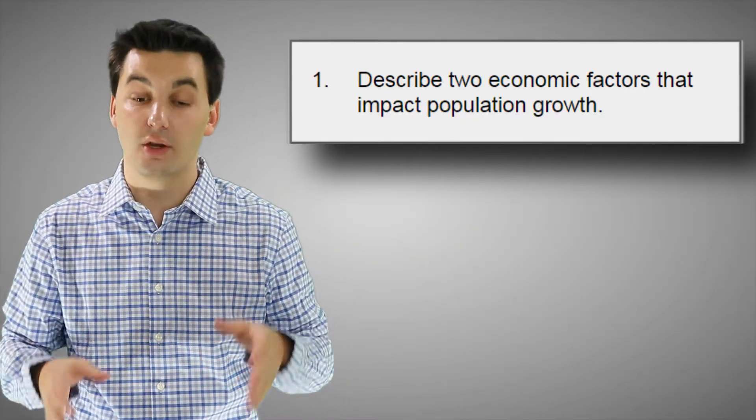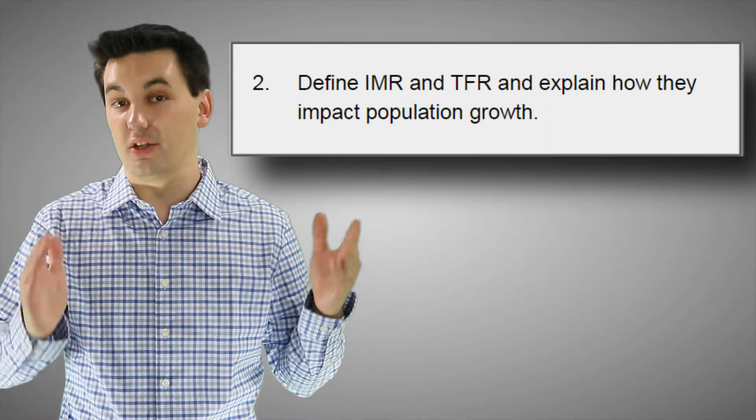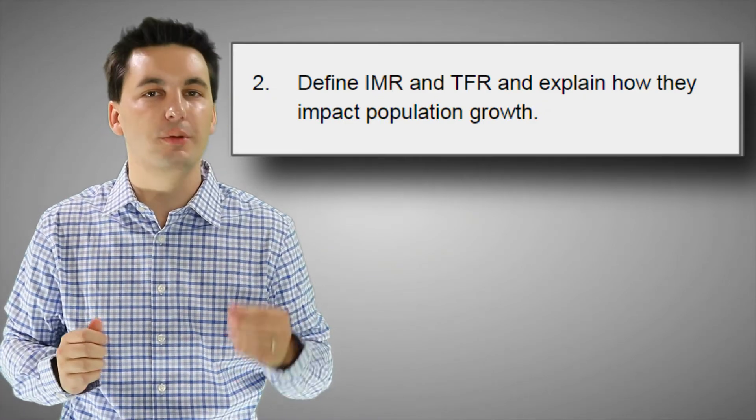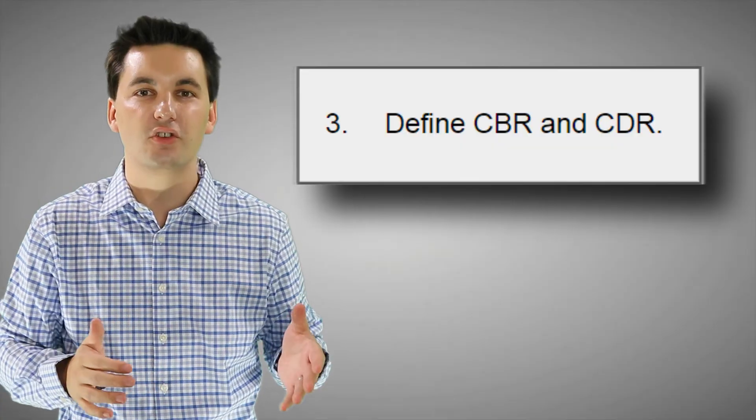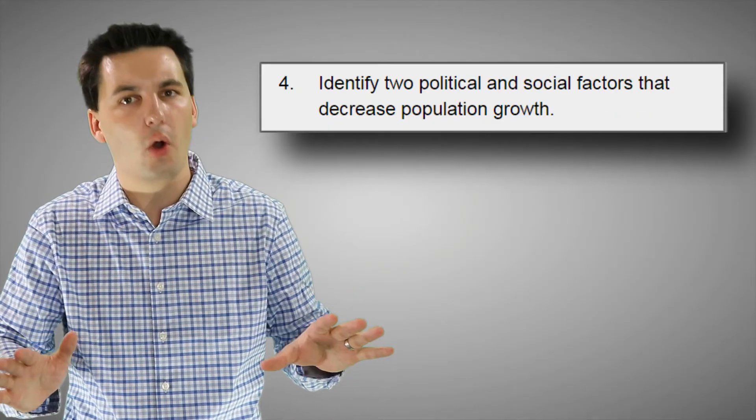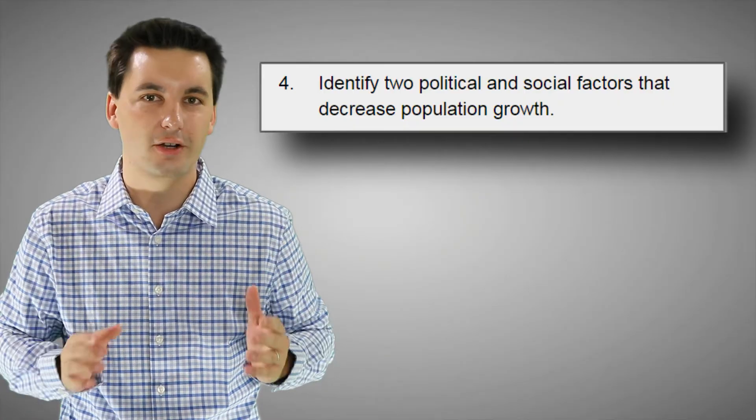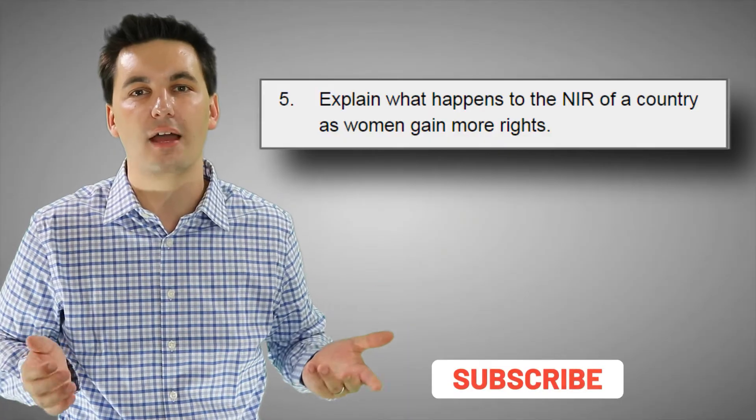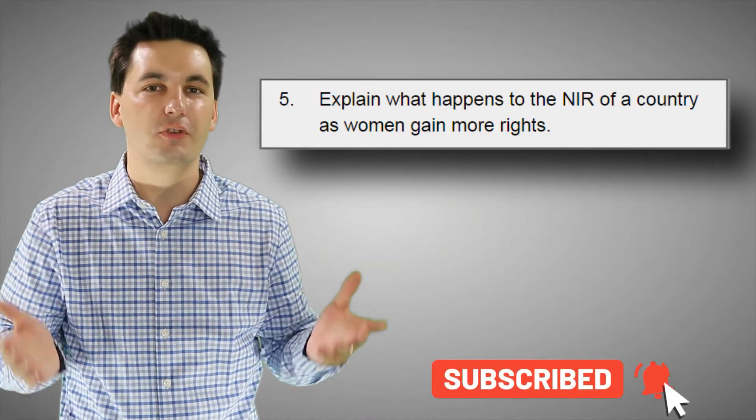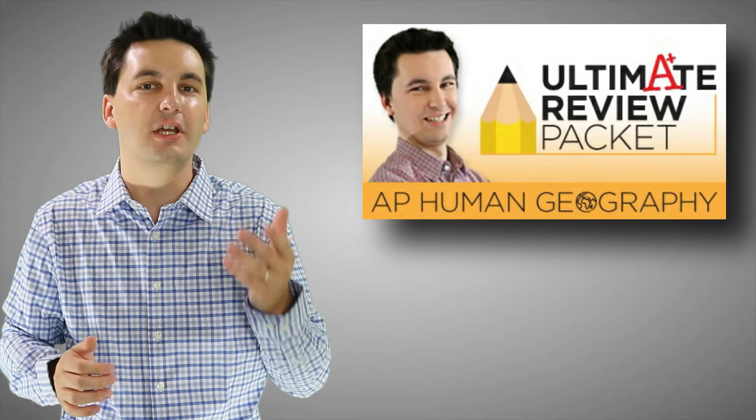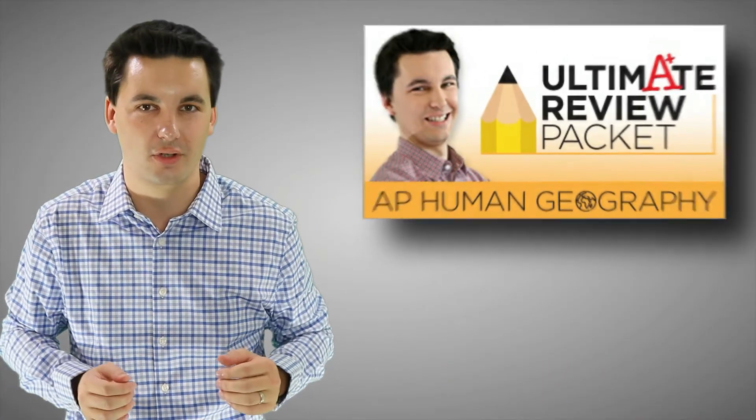So that about does it for 2.4. Now next time we're going into 2.5, and I can't stress this enough, it's going to be a huge video. Now, hopefully not in length, but in content. We're going to be going into the demographic transition model and the epidemiological transition model. These are so important for this unit and this entire class. So make sure you subscribe so you get notified when that video goes live. Also, if you need help with reviewing any of these concepts, make sure you check out the ultimate review packet. It'll help you get an A in your class and a 5 on that national exam.